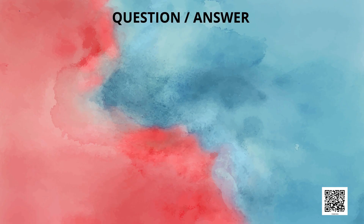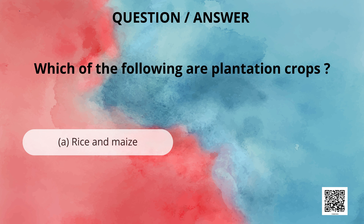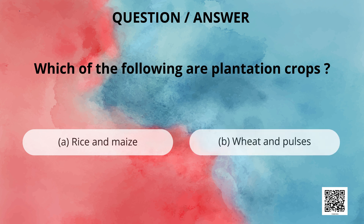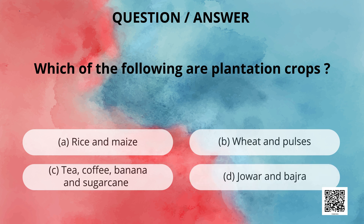With this, we come to the end of part one of this video. Let's analyze what we have learned. On your screens, you can see a question followed by four options. You have to pick the correct option. Which of the following are plantation crops? Is it rice and maize, wheat and pulses, tea, coffee, banana and sugarcane, or jowar and bajra? The correct answer is option number three: tea, coffee, banana and sugarcane.